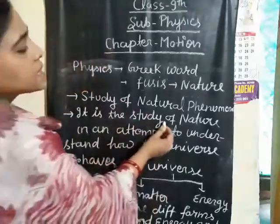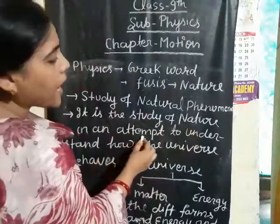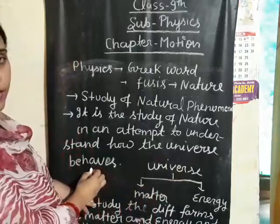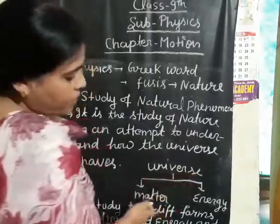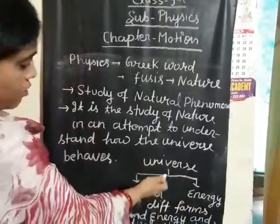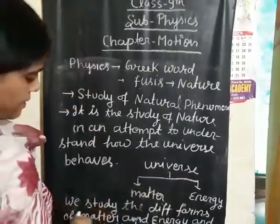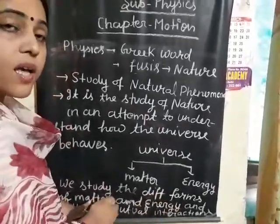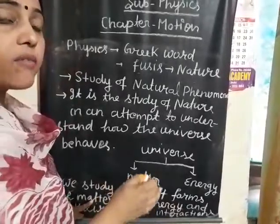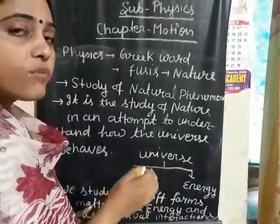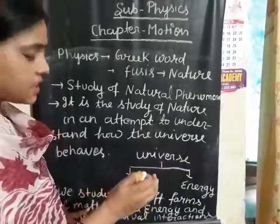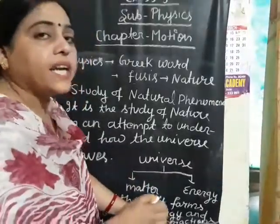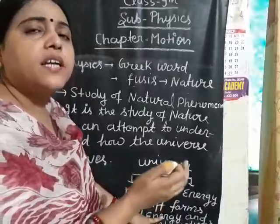In other words, it is the study of nature in an attempt to understand how the universe behaves. The universe is made of matter and energy. So physics is that branch of science in which we study the different forms of matter. Matter has five states: solid, liquid, gas, plasma, and a fifth state is the Bose-Einstein condensate state. And energy takes the form of light energy, kinetic energy, radiation, heat energy, etc.